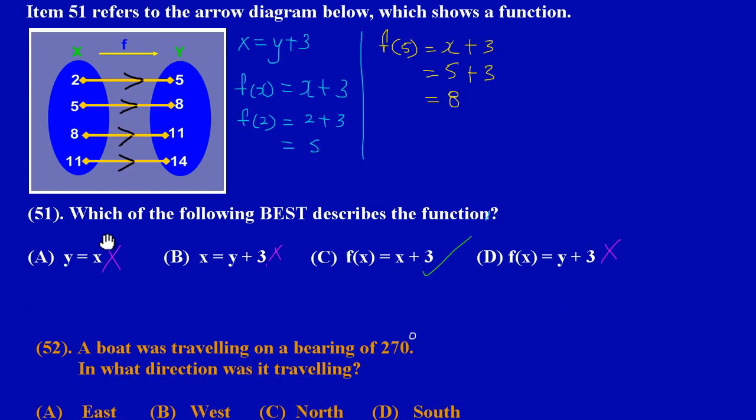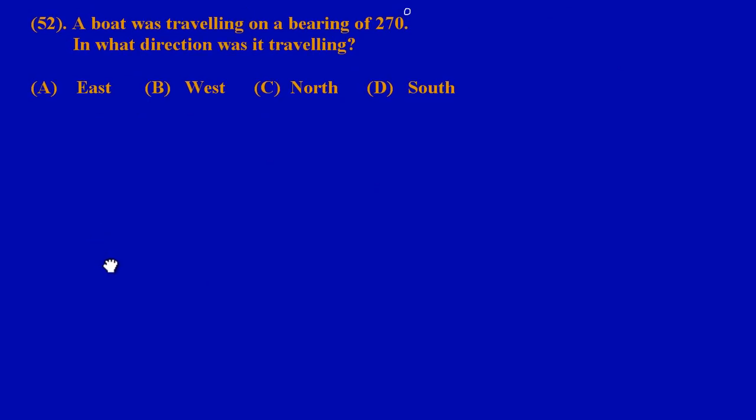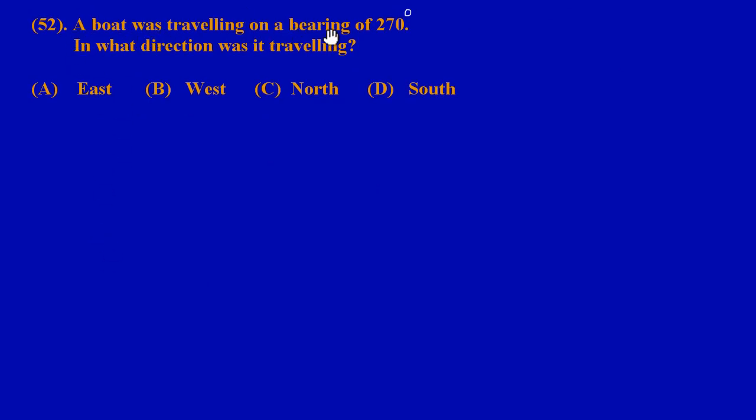Let's move on to question 52. Now in question 52 it says here a boat was traveling on a bearing of 270 degrees. In what direction was it traveling? A: east, B: west, C: north, D: south. Let's just establish some very important concepts as it relates to bearing. Let's say we have a point P. So here is my point P.